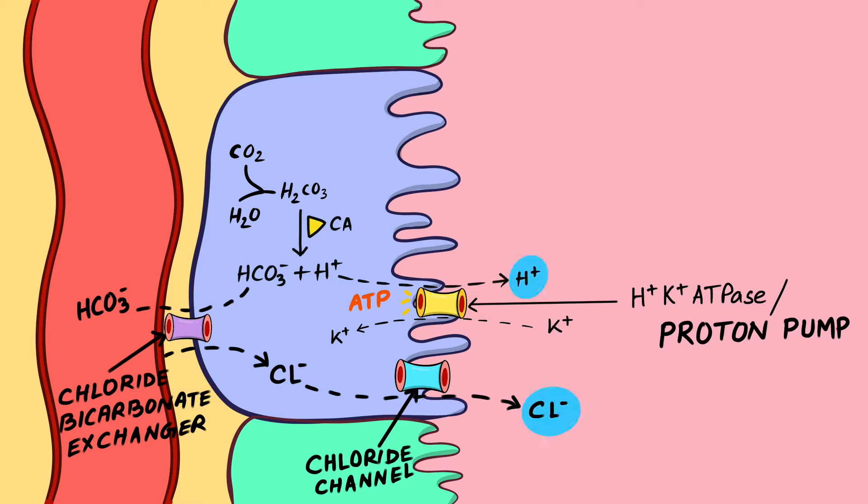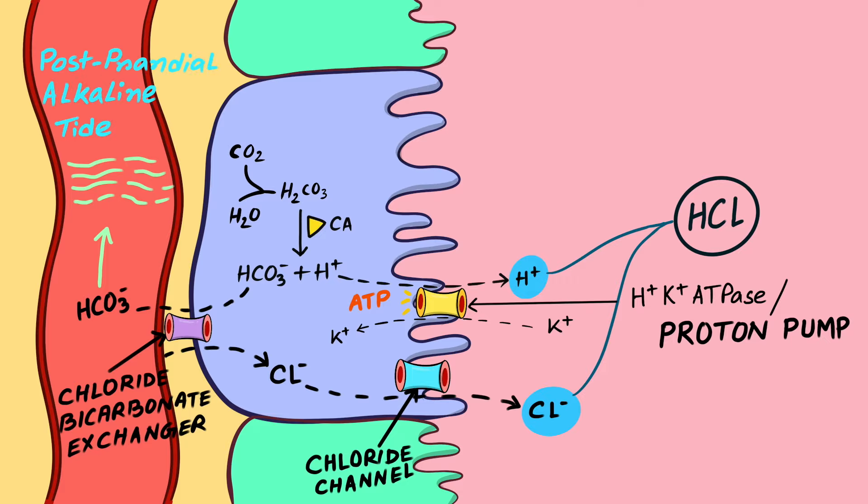This results in both hydrogen and chloride ions being present within the stomach lumen. As you see they have opposing charges. Hydrogen has positive charge and chloride has negative charge. Their opposing charges lead to them associating with each other to form hydrochloric acid. The bicarbonate released into the blood is responsible for post-prandial alkaline tide which is seen after meals.